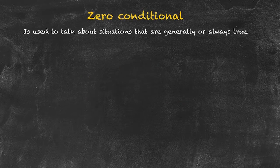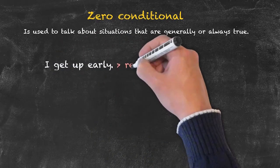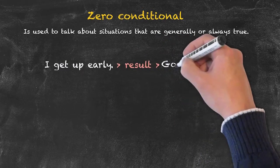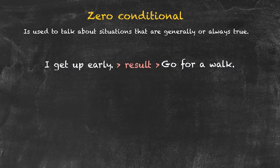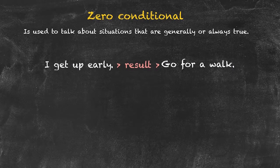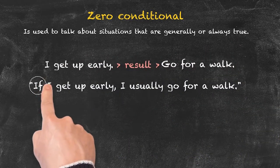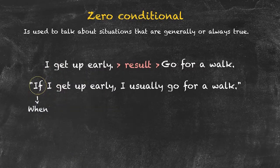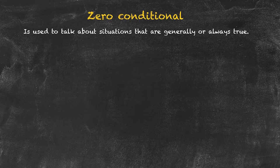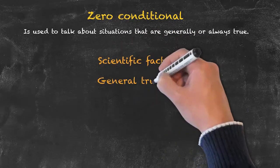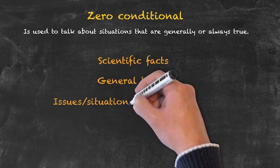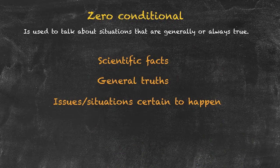Let's have a look at another example using the zero conditional with a slightly different situation. The result of me getting up early in the morning could be to go for a walk as a typical activity. The sentence would be: if I get up early, I usually go for a walk. The usages for the zero conditional are scientific facts, general truths, and situations that are certain or almost certain to happen.